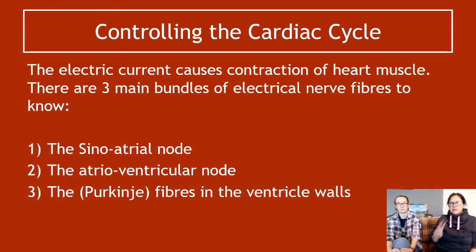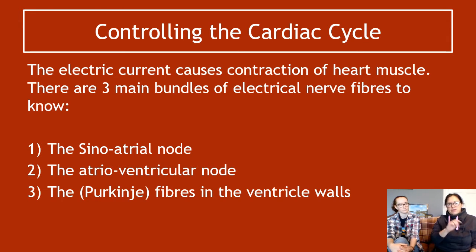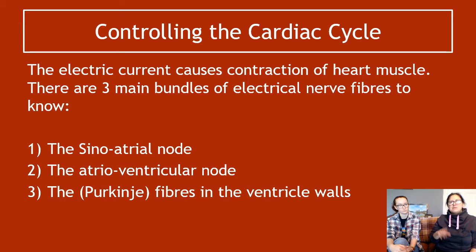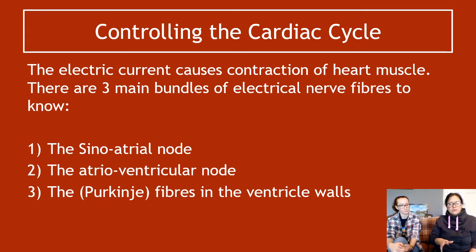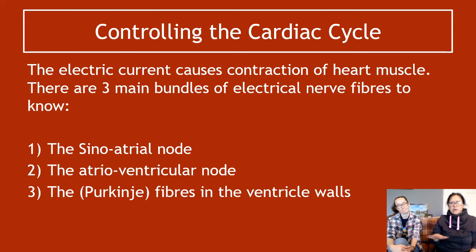There are three main bundles of electrical nerve fibers you need to know — their location and the order in which they work. First is the sinoatrial node, also known as the SA node or pacemaker cells. Second is the atrioventricular node, also known as the AV node. Third are the fibers in the ventricle walls, called Purkinje fibers — though you don't need to know the word 'Purkinje' for Higher Human.